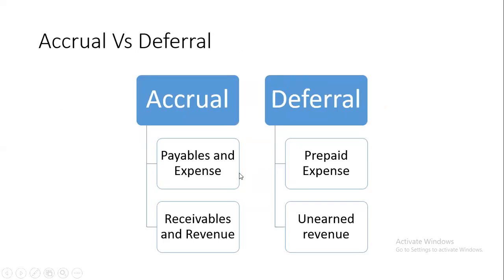Now, what are the two types? The main two types are accruals and deferrals. Within these two, we have one for expense and one for revenue. Similarly, we'll have one deferral case for expense and one deferral case for revenue as well. So in total, there are four cases of accruals and deferrals.